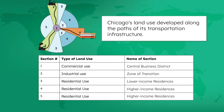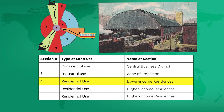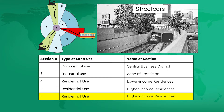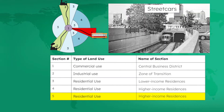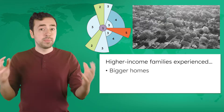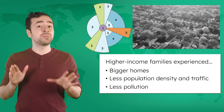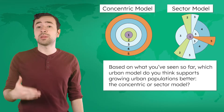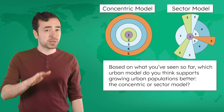Chicago's land use developed along the paths of its transportation infrastructure. Lower-income residential areas developed along railroads since it was the most affordable public transit of the time. Industrial activity also developed along these railroads for similar reasons — cheaper land and closer access to transportation for moving goods. Higher-income families settled along the routes of Chicago's electric streetcar system, which directly connected wealthier residential areas to Chicago's CBD. These higher-income wedges had bigger homes, less population density and traffic, and less pollution from industrial activity.